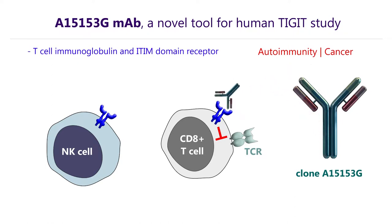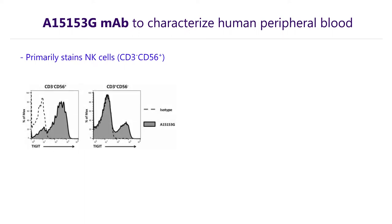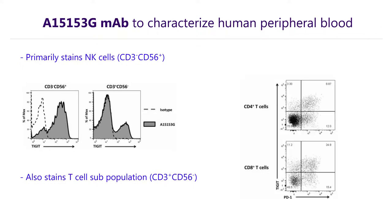First, we use the new clone to characterize human peripheral blood. As you can see, it primarily stains NK-cells, noted as CD56 positive and CD3 negative. It also stains a subpopulation of T-cells, which are CD3 positive but CD56 negative. A higher percentage of CD8 positive T-cells express TIGIT compared to CD4 positive T-cells. TIGIT could not be observed on myeloid cells or B-cells.